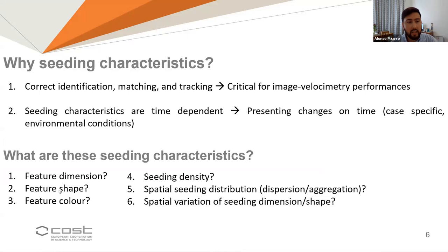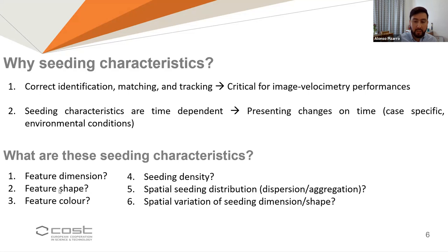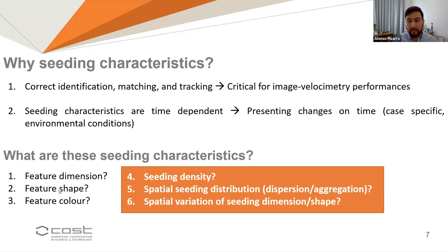Coming back to seeding characteristics — the right question is not why seeding characteristics, but what are the important seeding metrics for image velocimetry analysis. For example: feature dimension, shape, color, seeding density, dispersion, aggregation of patterns, and spatial variation of seeding dimension shapes. This webinar focuses on three seeding metrics: seeding density, spatial seeding distribution characterizing dispersion or aggregation behaviors, and spatial variation of seeding dimension shape.